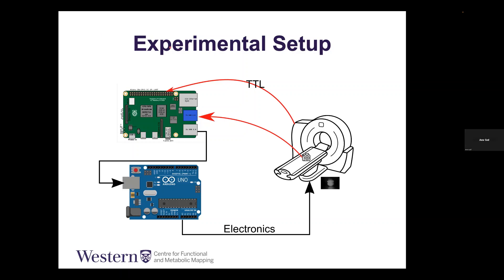Whenever we acquire any scan, the scanner will trigger a TTL pulse. We receive this TTL pulse using the Raspberry Pi, and the Raspberry Pi also controls the MR cameras that Sam talked about that we put inside the bore to be able to see the animal motion.